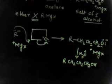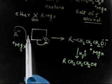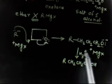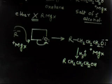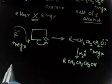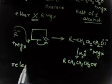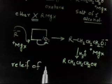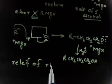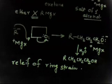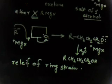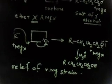The driving force in this case is that Oxetane has a four-membered ring. When R⁻ attacks, the ring strain is relieved. So the relief of ring strain is the driving force for this reaction. This explains why this ether reacts with the Grignard reagent while most ethers do not.